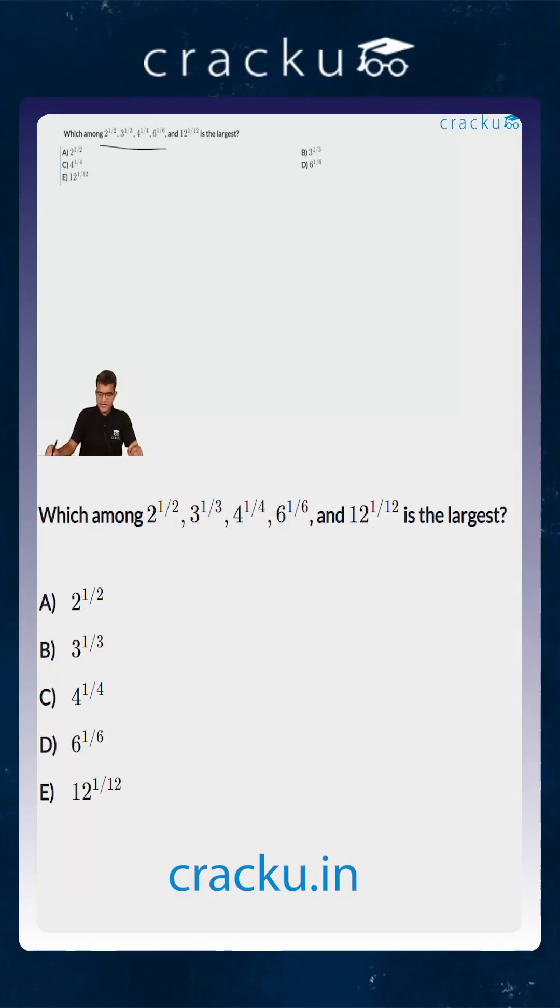In this question we are given five numbers and we are required to calculate which of them is the highest. The first one is 2 to the power 1/2, the second one is 3 to the power 1/3, the third one is 4 to the power 1/4.